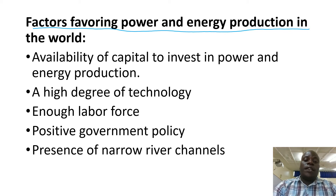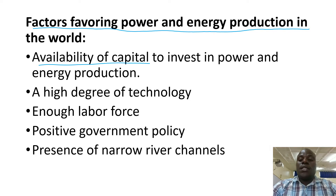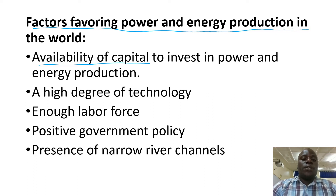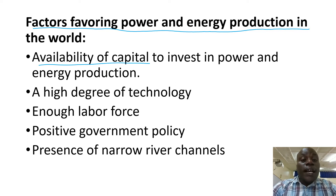Number one: availability of capital. This is in the form of money, which is used to pay for labor, which is used to transport materials to use, and which is also used to buy the materials used apart from transportation.